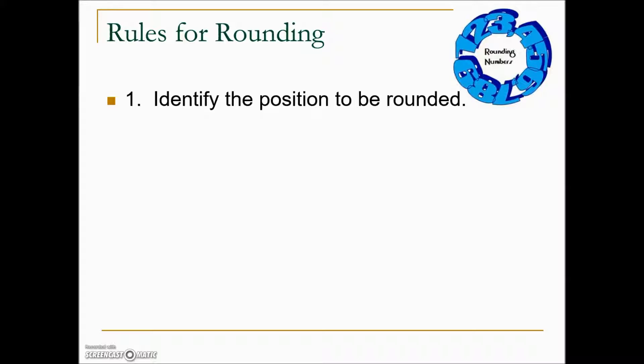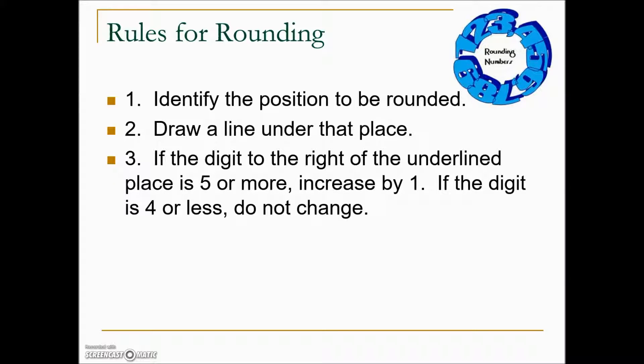Rules for rounding. When we're rounding a number, we first need to identify the position to be rounded. It's helpful to underline that position. Then the next step is to look at the digit to the right of the rounding position. The rule is: if that number is five or more, increase the position that you're rounding by one. If the digit is four or less, do not change.